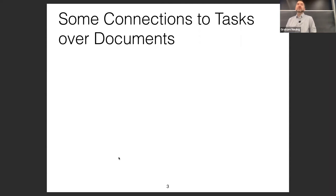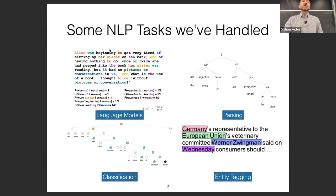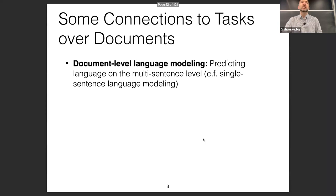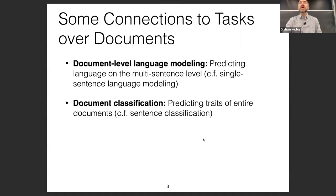Interestingly, all of these tasks involve predicting the naturalness of text, uncovering hidden structure, doing some classification, or tagging. These connect to document-level tasks like what Bob covered in the discourse section. The first is document-level language modeling — predicting language on a multi-sentence level over a long coherent discourse. The mainstream in language modeling has now shifted to document level; we no longer really do sentence-by-sentence level modeling.